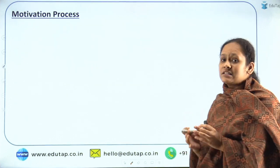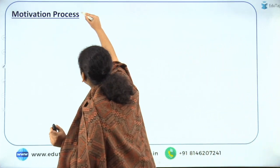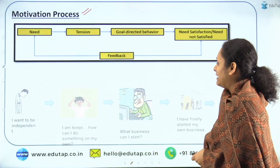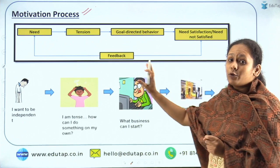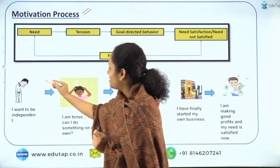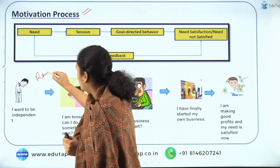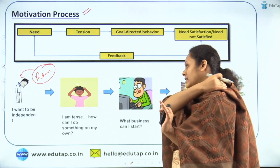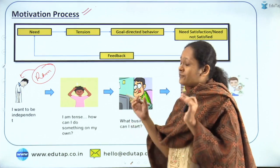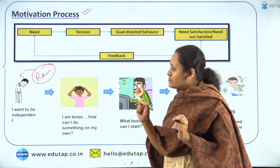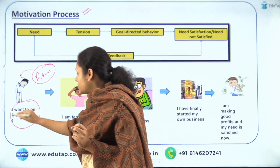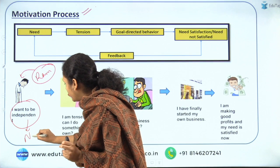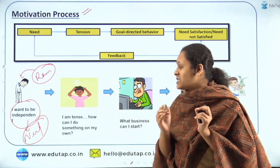Let's move ahead and understand how the motivation process works. Let's say there is a person, Ram, who wants to become independent — he is completely dependent on his parents. The first thing which comes to his mind is what he needs: he wants to become independent. So becoming independent is Ram's need.